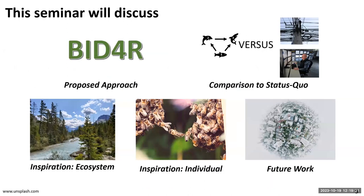In this seminar we'll discuss five things: why this is hard to fix and why we haven't figured out robust ways to design for resilience; our group's proposed approach to increasing resilience; how that approach compares to current approaches; how to take inspiration from ecosystems to increase resilience; how to take inspiration from individual organisms in nature; and finally, a vision for biologically inspired design for resilience.